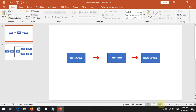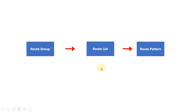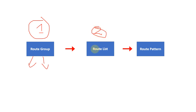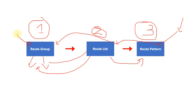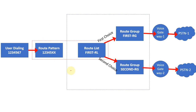When configuring Route Group, Route List, and Route Pattern, we should follow this order: first, create the Route Group — you can create one or multiple Route Groups as needed. After that, create the Route List, inside which you can call the created Route Groups. Then, create the Route Pattern as the third step. Inside the Route Pattern, you call the Route List. Once the user is dialing, the call matches the Route Pattern, looks up the Route List, goes to the Route Group, and ultimately reaches the destination.